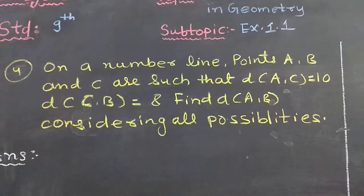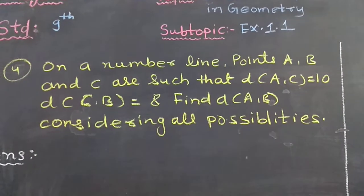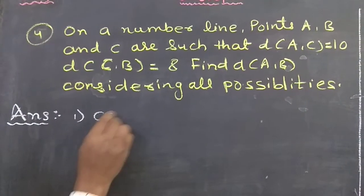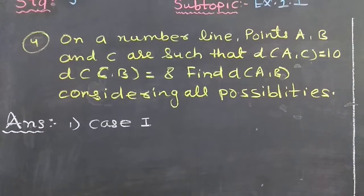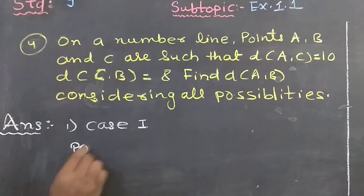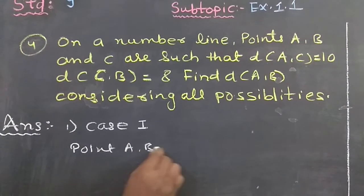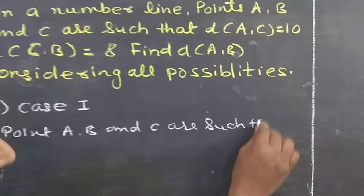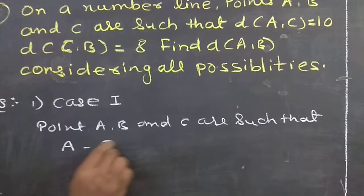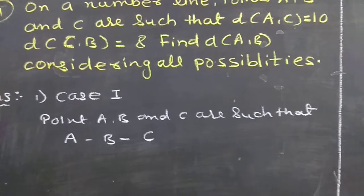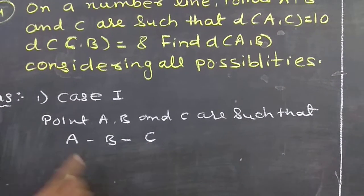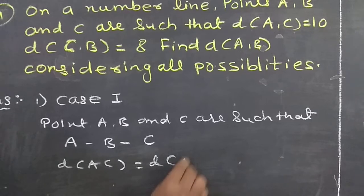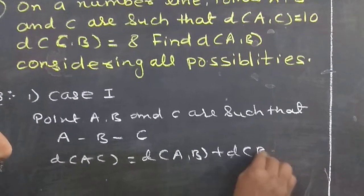All possibilities means the sequence of these points may be different. So let us start with all possibilities. In case 1, suppose points A, B, and C are such that A-B-C, meaning these 3 points are collinear with B in between. Now how will we get distance AC? We will get distance AC if we add distance AB plus distance BC.